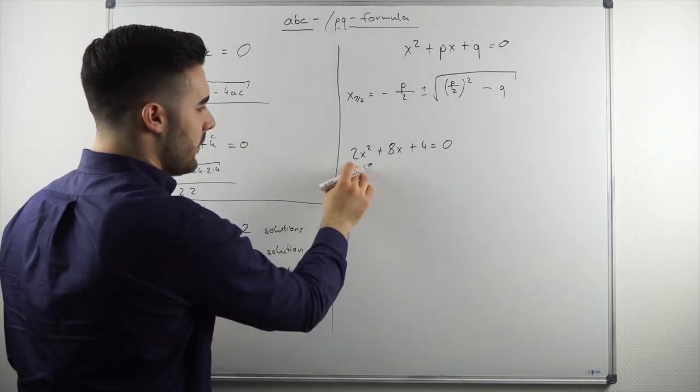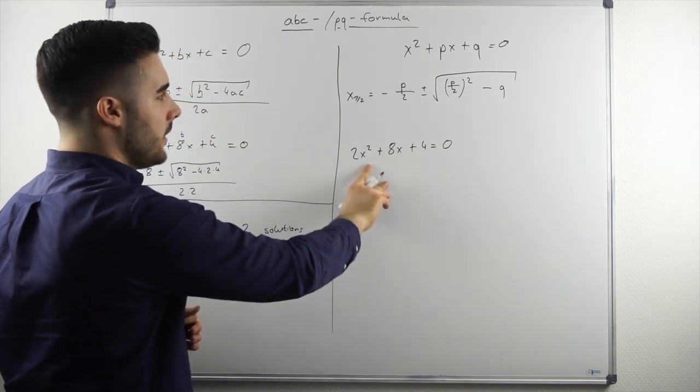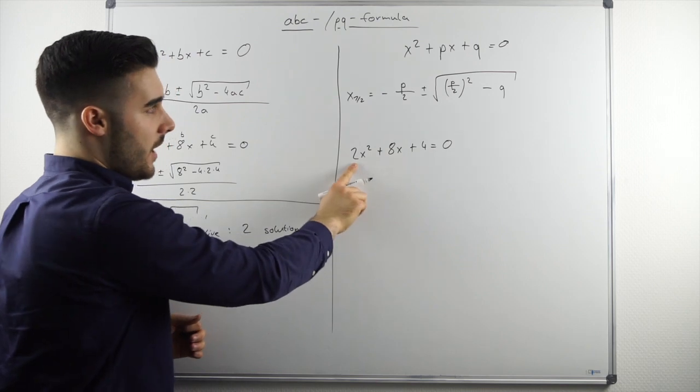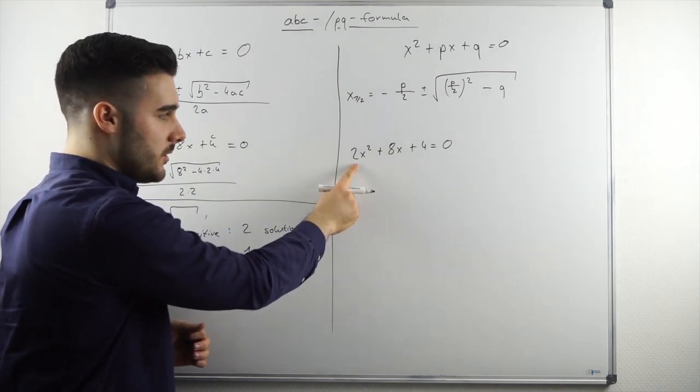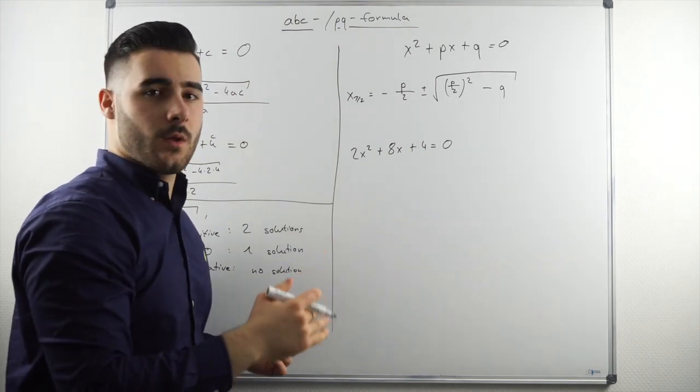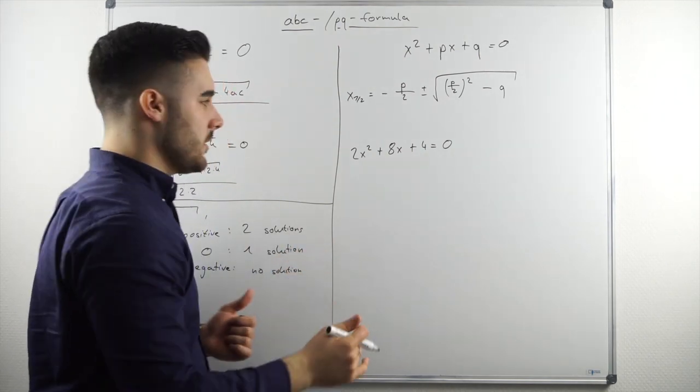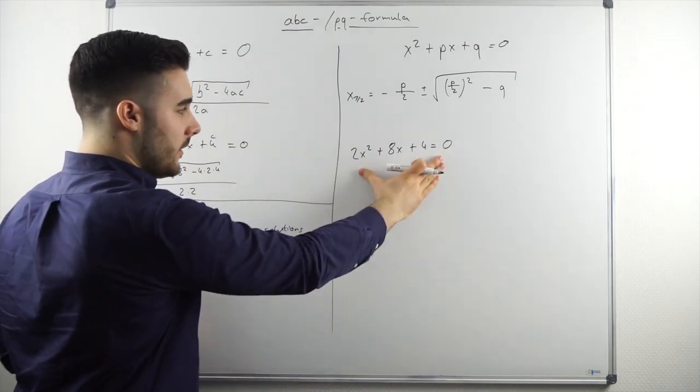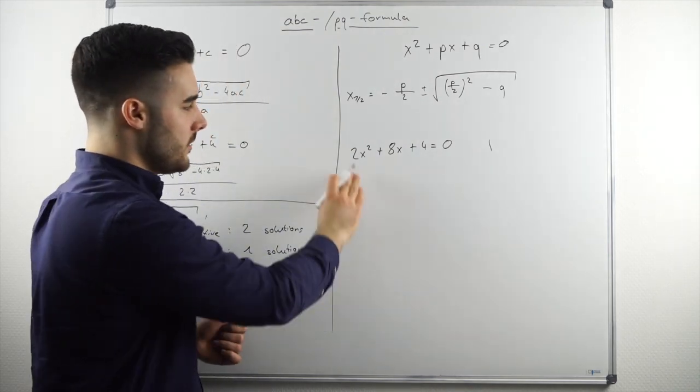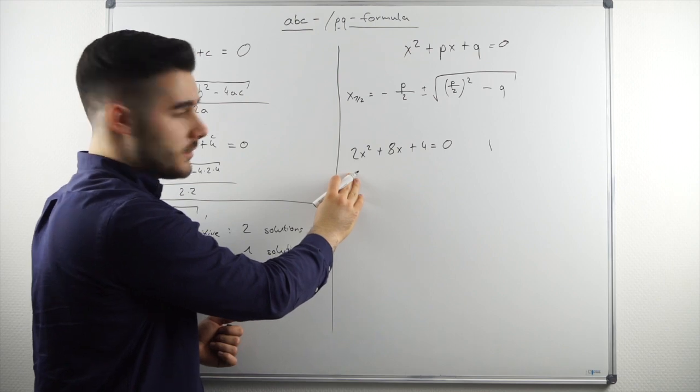So as you can see, we have two x squared plus eight x plus four equal to zero. And as you can take from the general form, we don't have any or we are not allowed to have any coefficients in front of the x squared. So because we know what to do in those kind of situations, we know directly that we need to simplify the function. So what we do is, we simplify by reducing the whole thing by two.